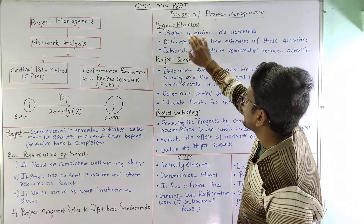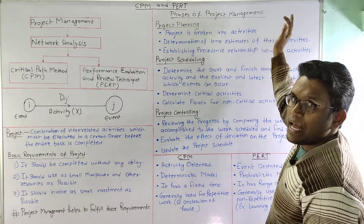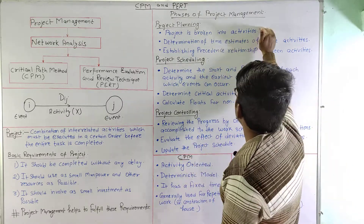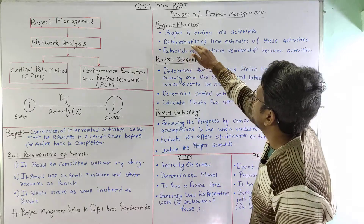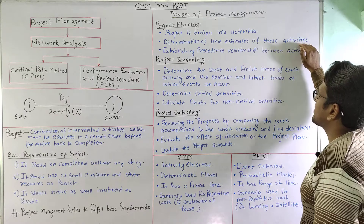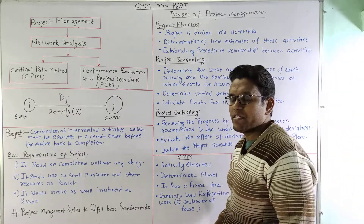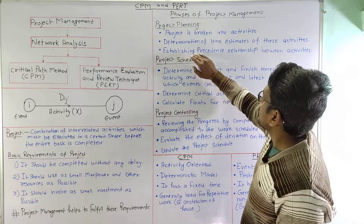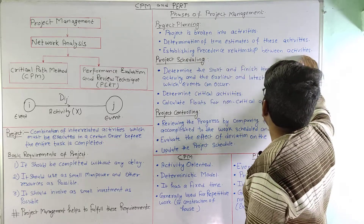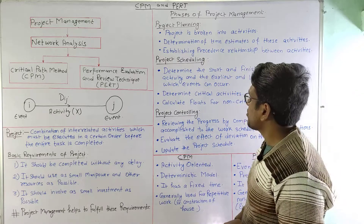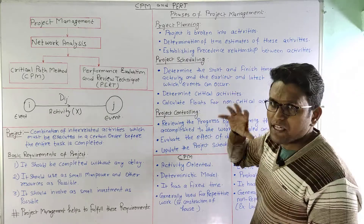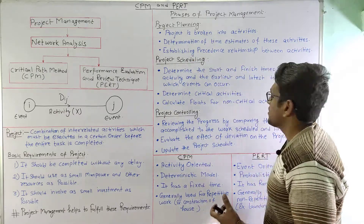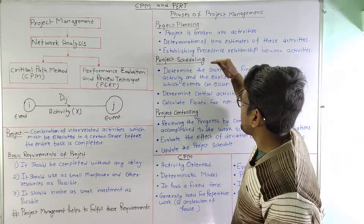In project planning, the project is broken down into individual activities. Second is the determination of time estimates of these activities — how much time a particular activity is going to take. Third is establishing a precedence relationship between the activities, based on which we will construct a network.